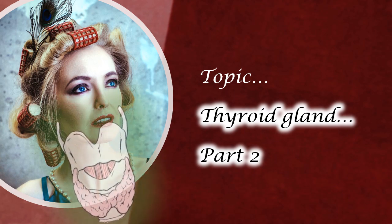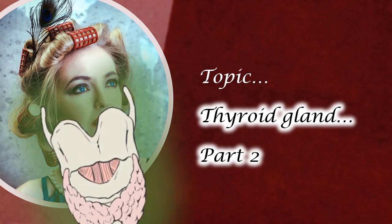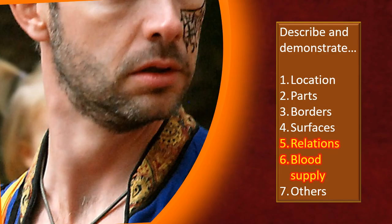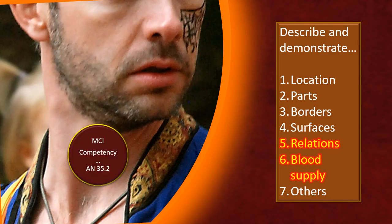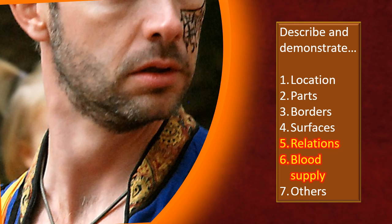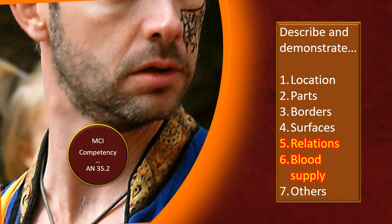We have covered a little bit of the thyroid introductory aspects in part 1, particularly the parts, surfaces, borders, surface marking, etc. Now we are going to cover the other two major areas, namely relations and blood supply.